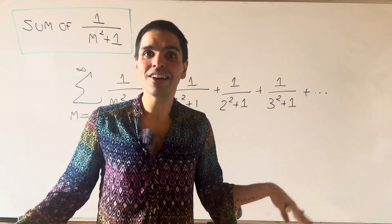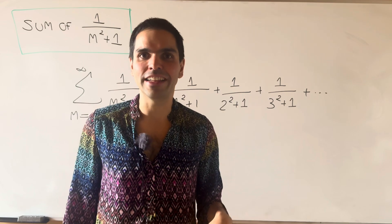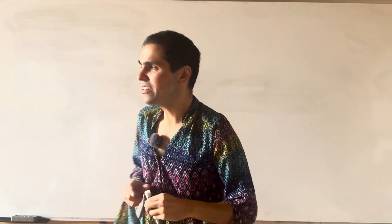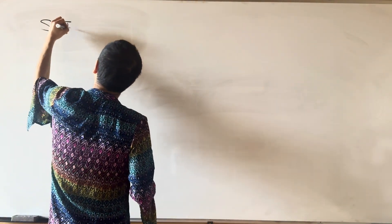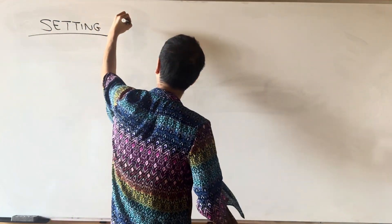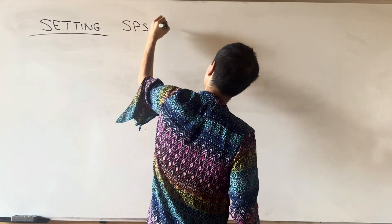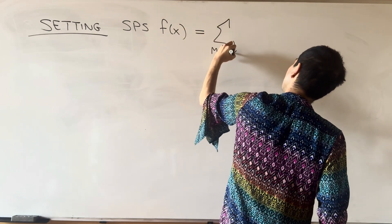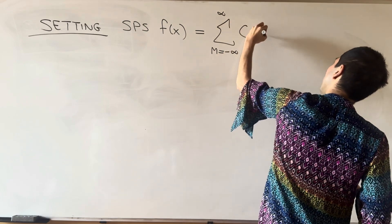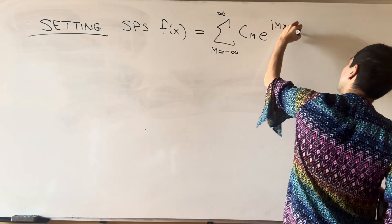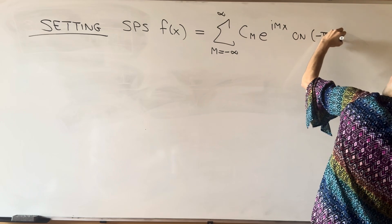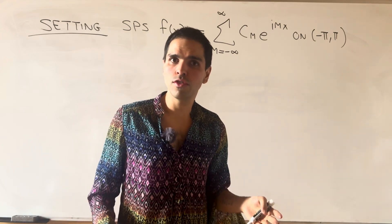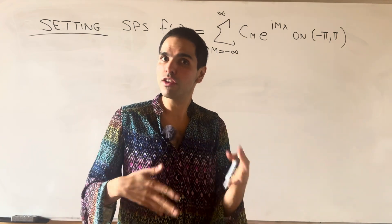And this will lead us to the beautiful world of Parseval's identity for complex Fourier series. So suppose you have a function f of x, and you expand it out as a complex Fourier series: the sum from minus infinity to infinity of c_n times e^{imx}, on the full interval minus pi to pi. Then the good news is everything we talked about so far still holds, except with the following modifications.